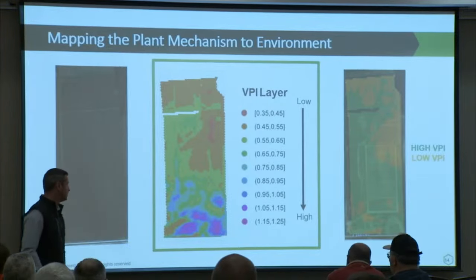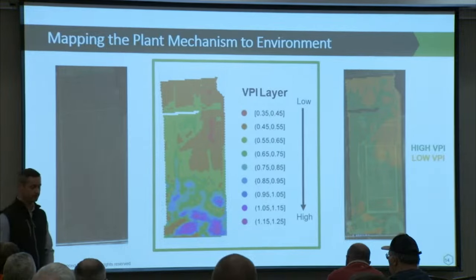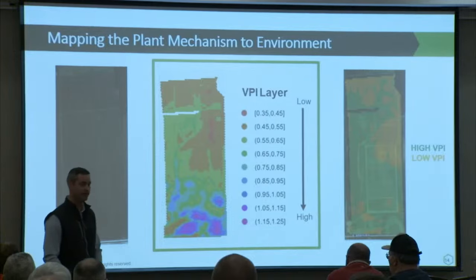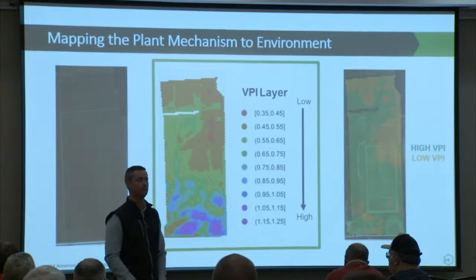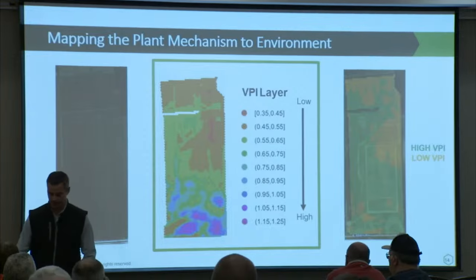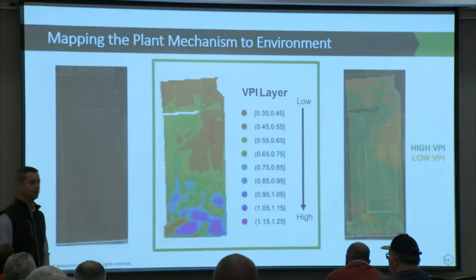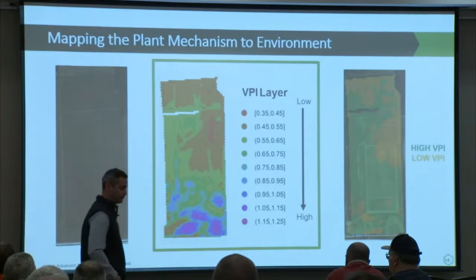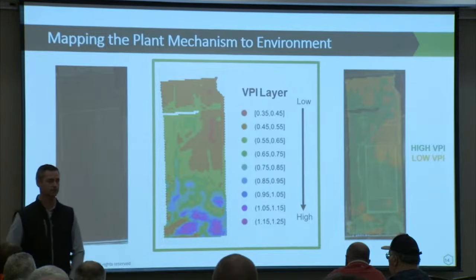This complex background layer helps us characterize fields to understand how much exposure we have to high VPI versus low VPI areas. Now I can take the known mechanism of the plant and pair it to the environment using the same methodology — essentially a tactic to increase our probability of success with the varieties we're using. You might also think: does this provide the opportunity for multi-variety planting down the road? The planter technology is there, and I think the answer is going to be yes.